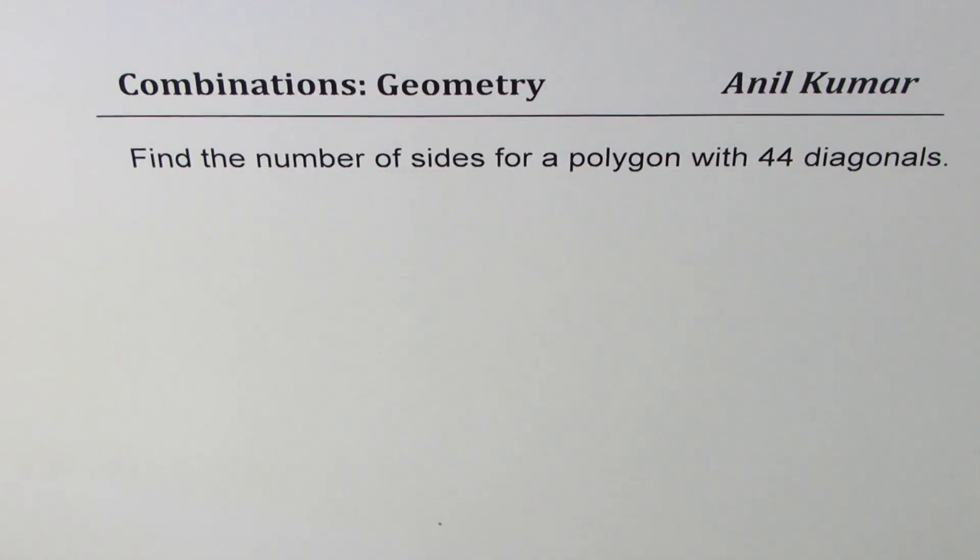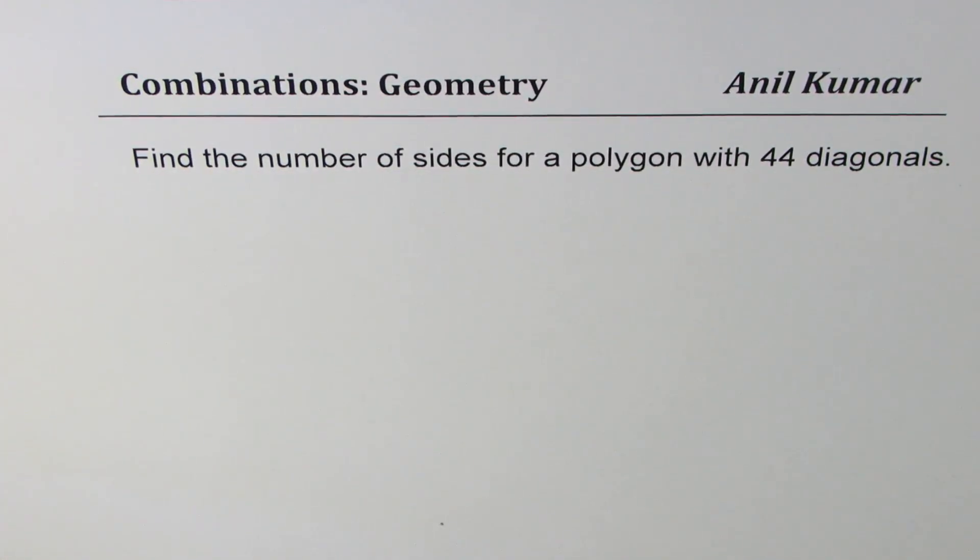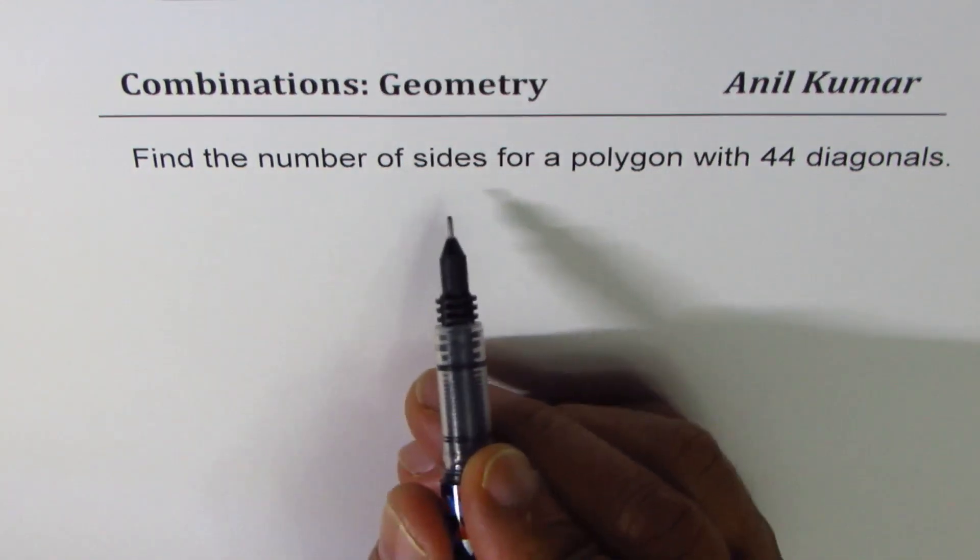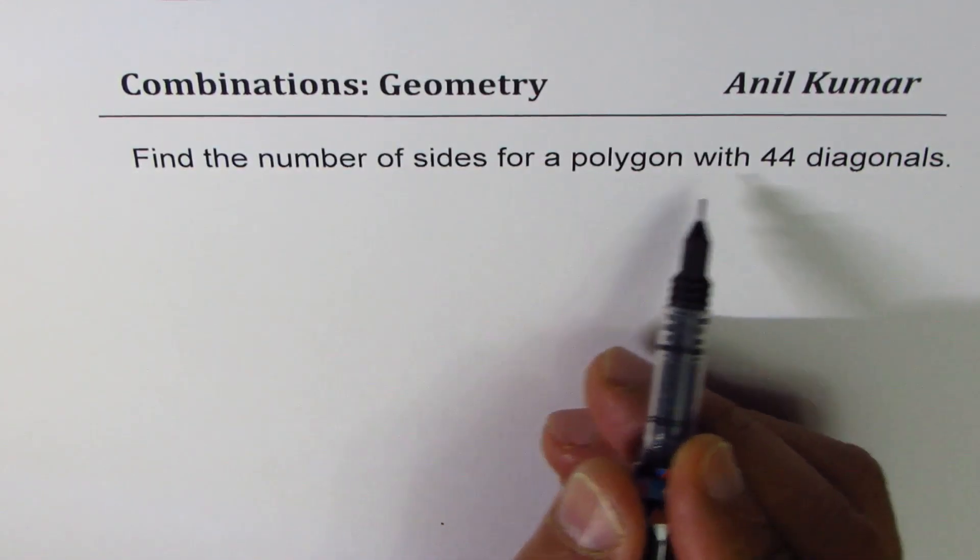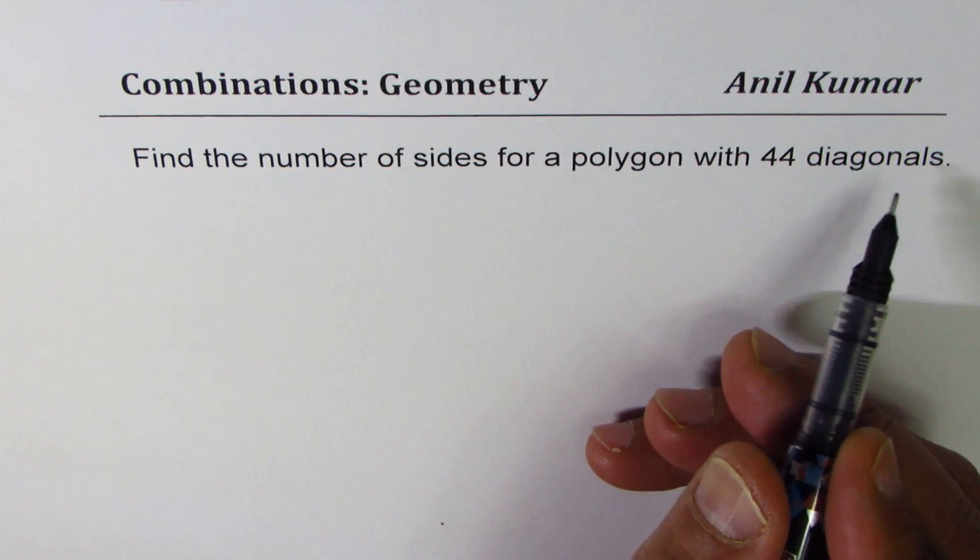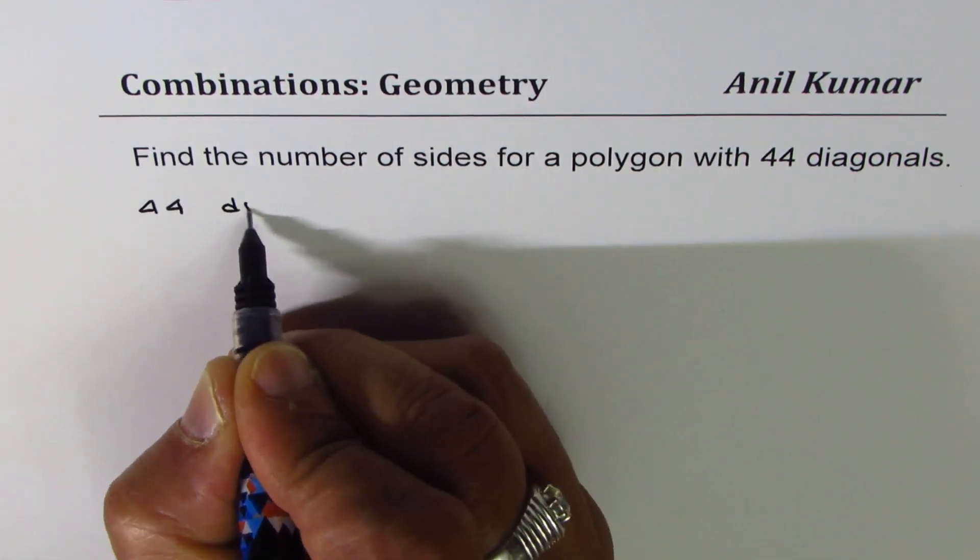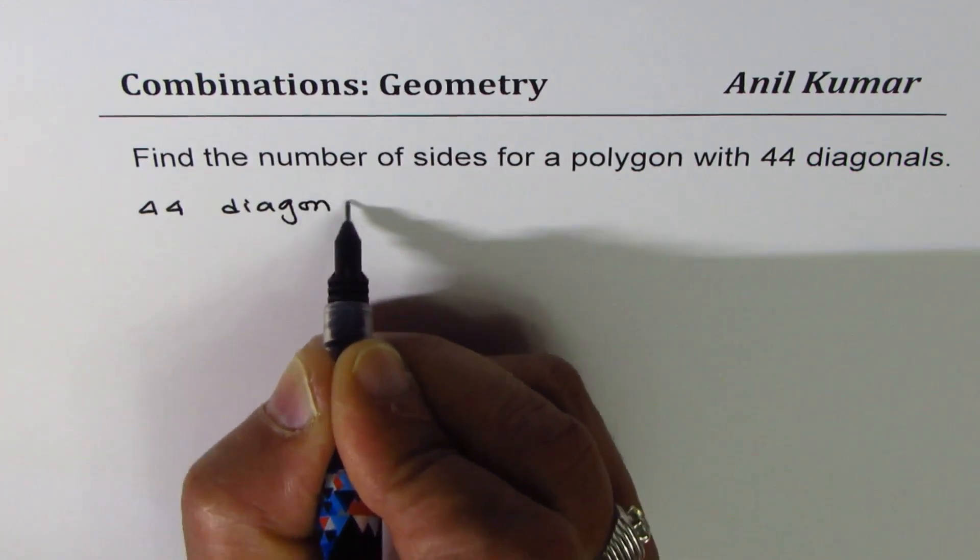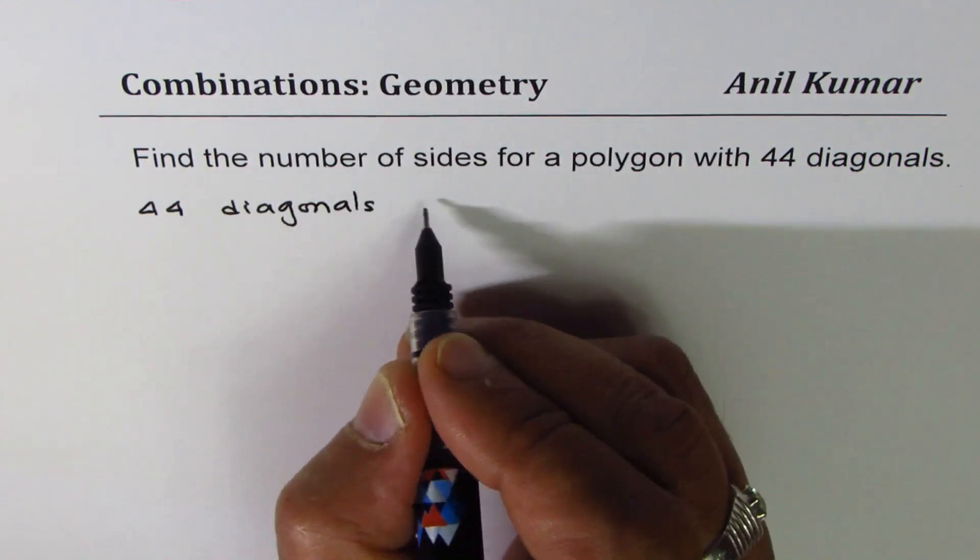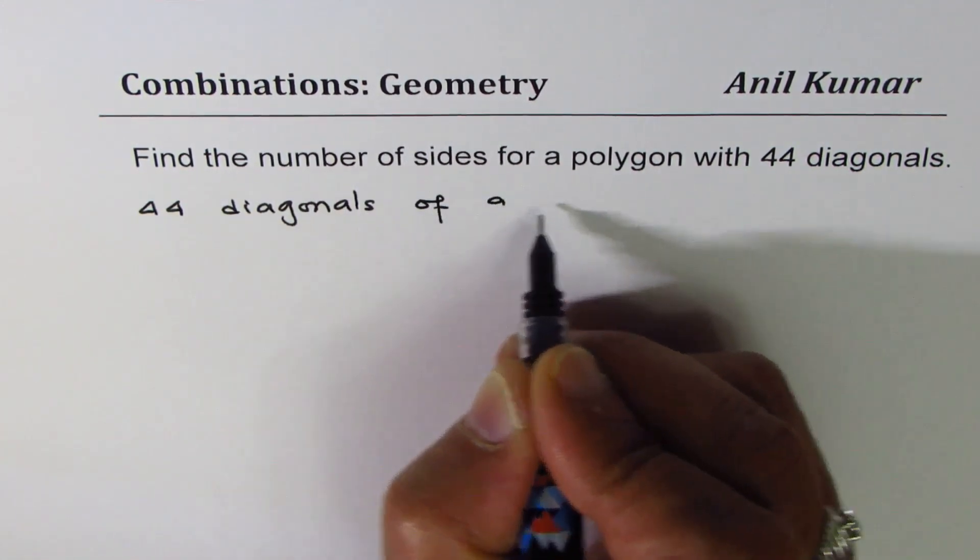I'm Anil Kumar sharing with you an application question on combinations related to geometry. The question here is find the number of sides for a polygon with 44 diagonals. So what we're given here is 44 diagonals of a polygon.